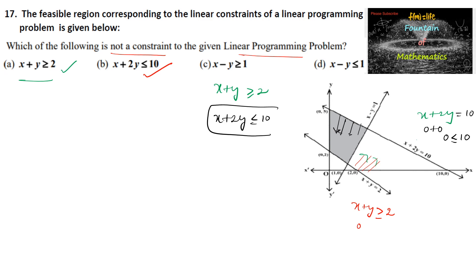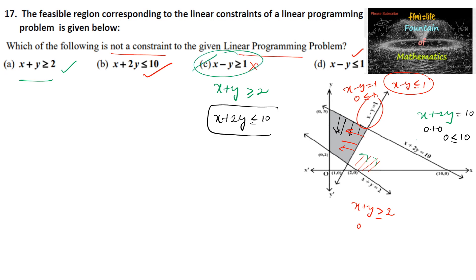For the next line, x - y = 1: substituting the origin, the shaded region is towards the origin, so it must satisfy 0 - 0 = 0 ≤ 1, meaning x - y ≤ 1 is the correct constraint. However, the third option states x - y ≥ 1, which is the opposite. So this is not a constraint. Therefore, option C is the answer.